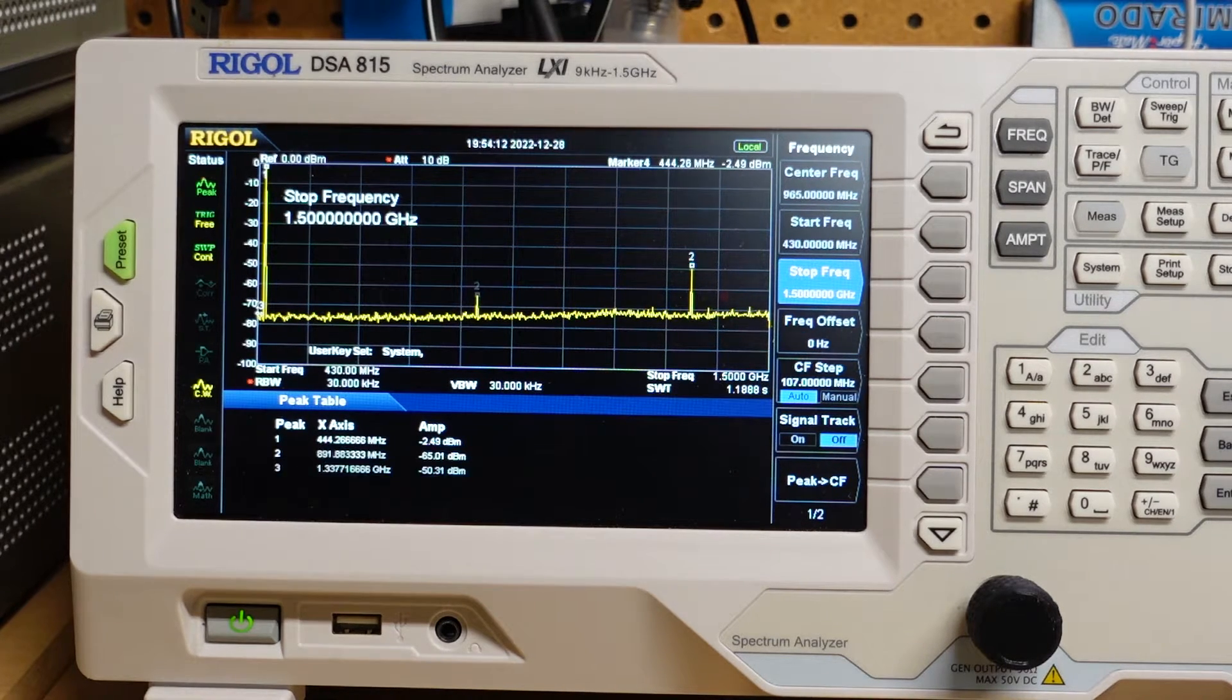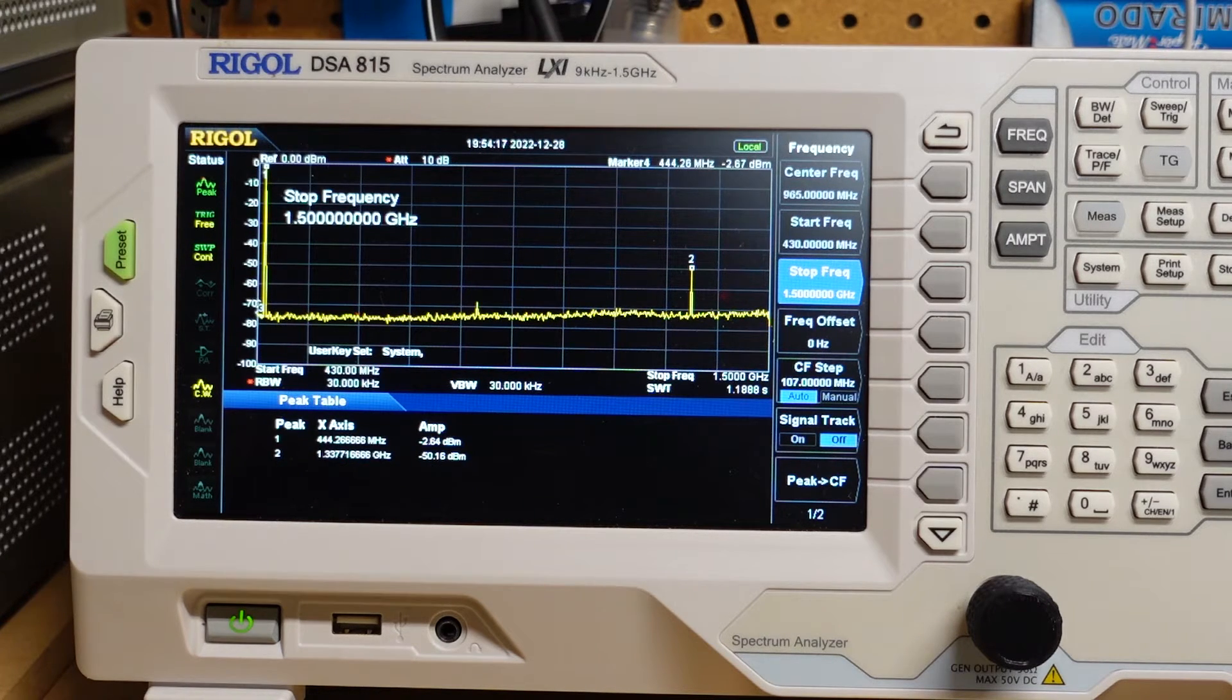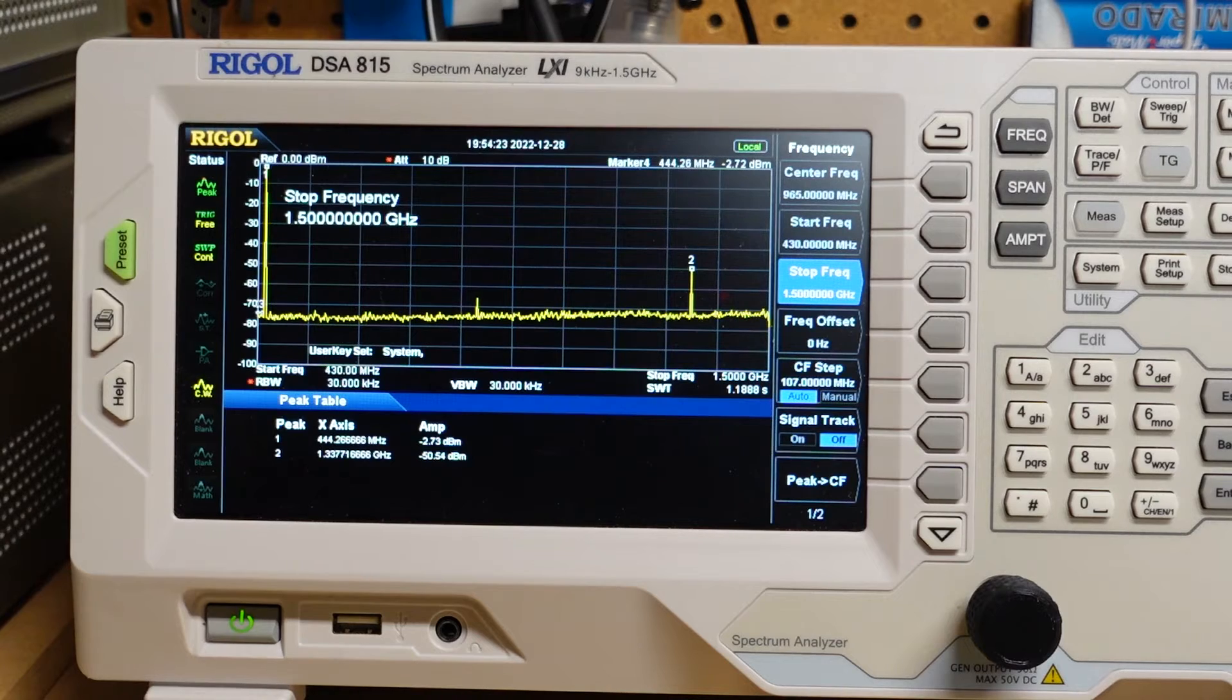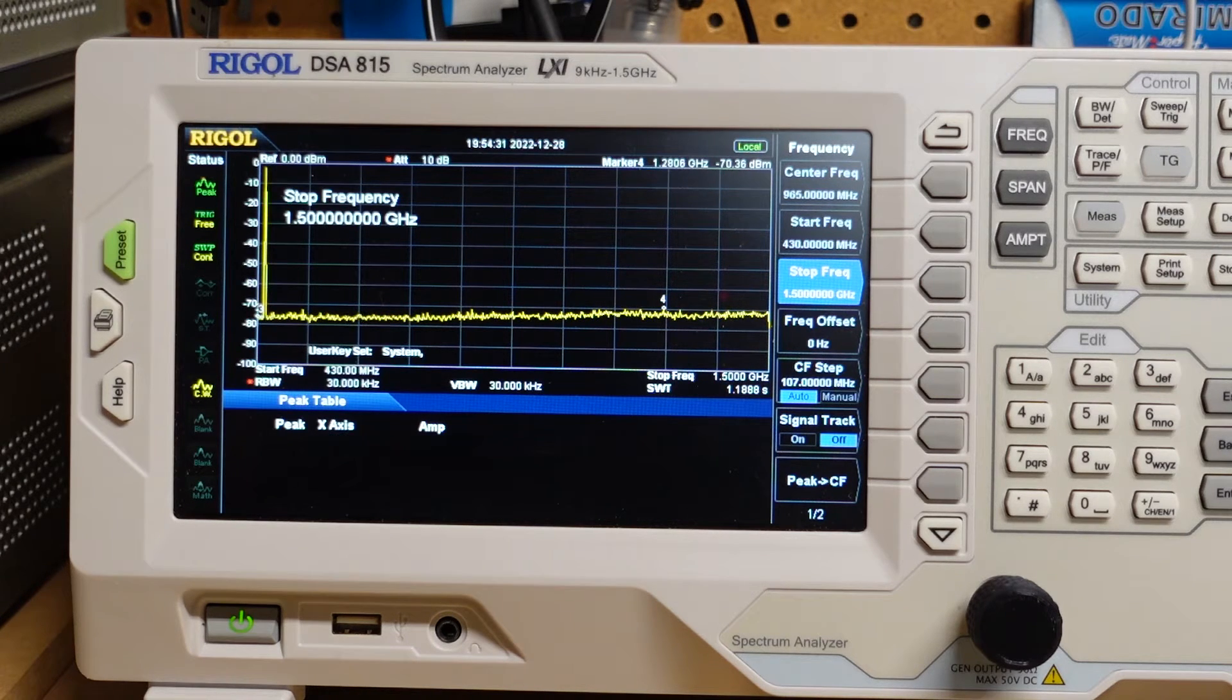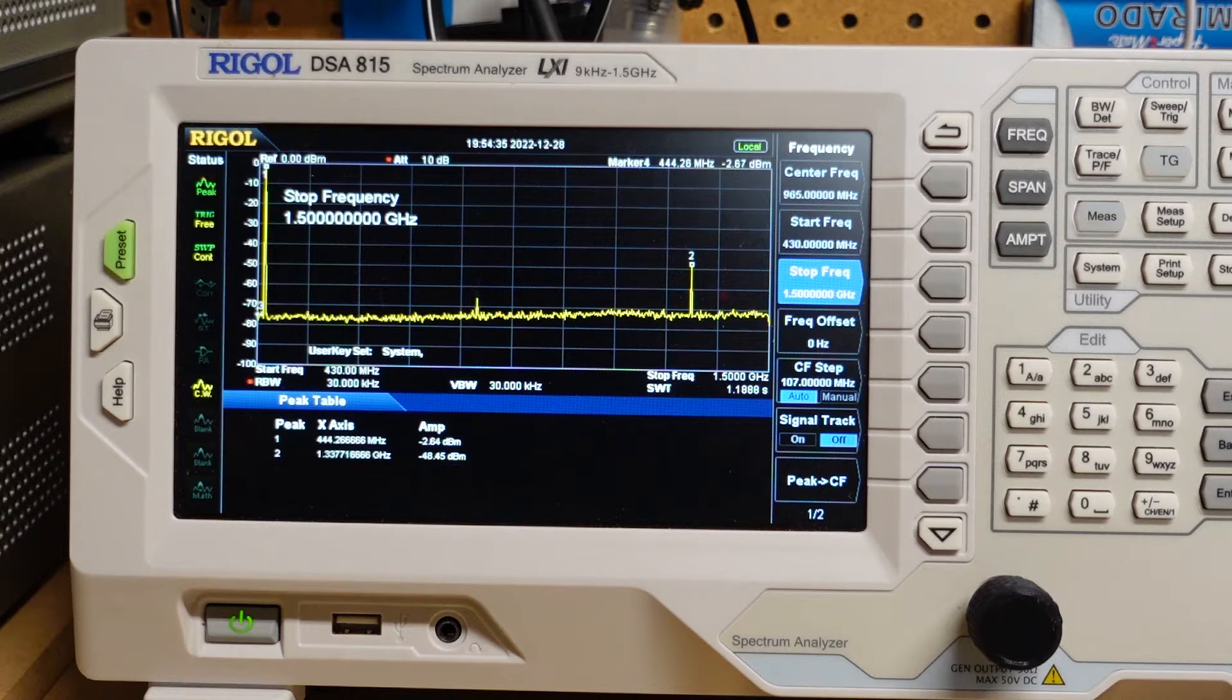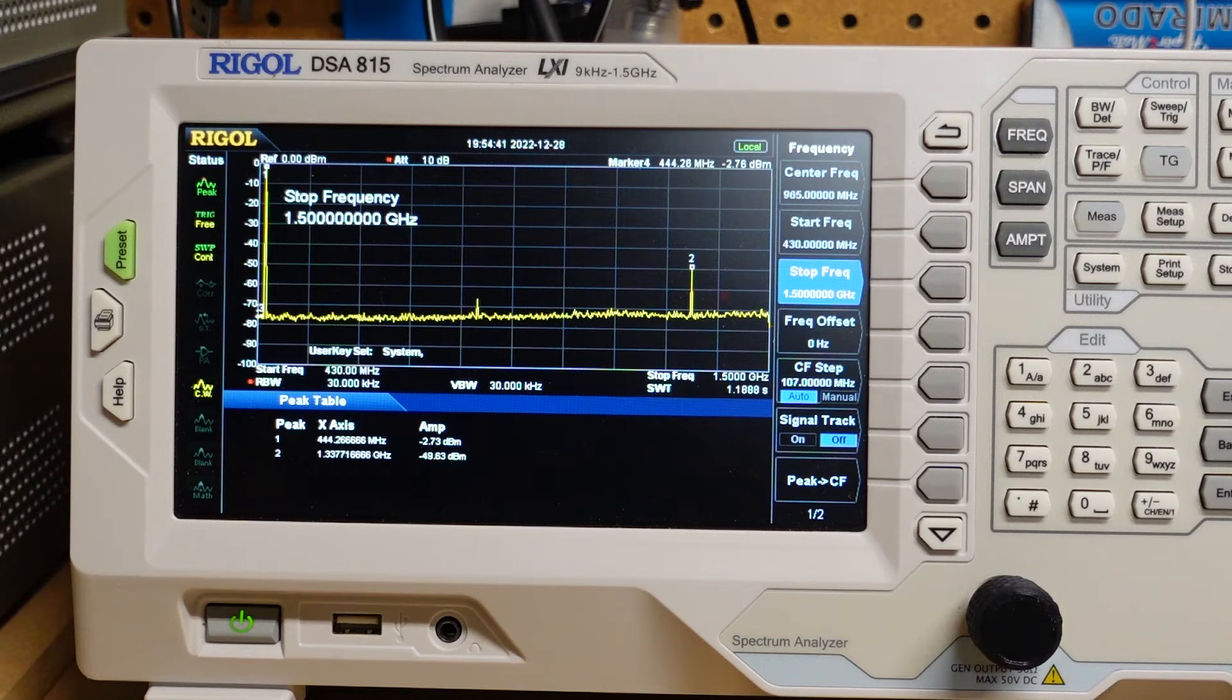And we have our peak at minus 2 dBm. That's the leftmost signal. Then our second harmonic is minus 50 dBm, which is 48 down. And then the third one kind of popped up for a second and went away. Let's try it again and see if I can get it to come back. There it is. And it's at minus 48 dBm, 49. That's the third harmonic.